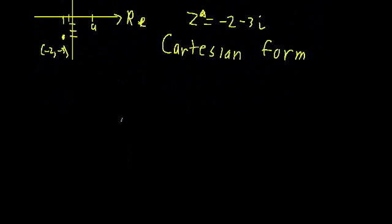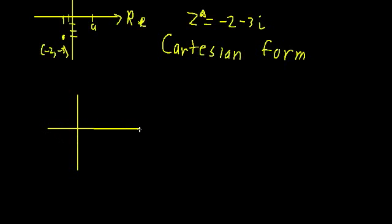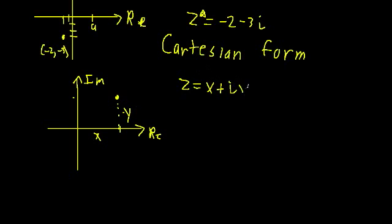There's another way we can plot complex numbers, and as you might have guessed, it involves what we call polar form. Let's redraw our axes — the real axis and the imaginary axis. If we have a point, in Cartesian form we find the real component, let's call it distance x, and the imaginary component, let's call it distance y, so Z = x + iy. But in polar form, instead of describing a point using axis components, we use a radial distance from the origin r, and an angle θ.